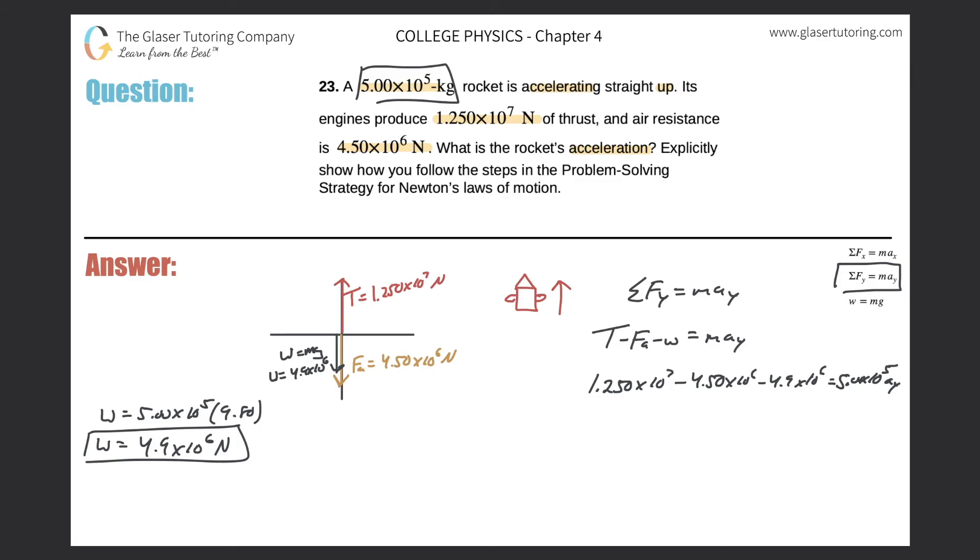So 1.25 times 10 to the 7 minus 4.5 times 10 to the 6 minus 4.9 times 10 to the 6, and we get a value of 3.1 times 10 to the 6. That will now equal 5.00 times 10 to the 5 times the acceleration. So divide out the 5.00 times 10 to the 5 from both sides, and we get the acceleration in the y direction. So we get an acceleration of 6.2 meters per second squared.